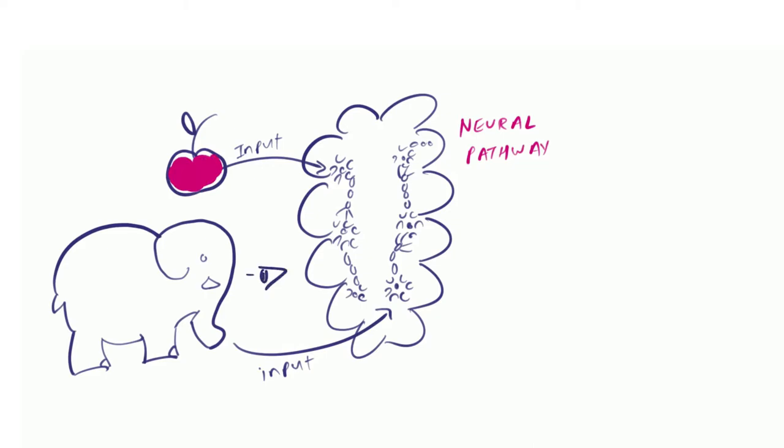When you see or think about an apple or an elephant, the associated neural pathway becomes active. You see an apple and in the associated neural pathway, the neurotransmitters in the synapses of those neurons start firing.